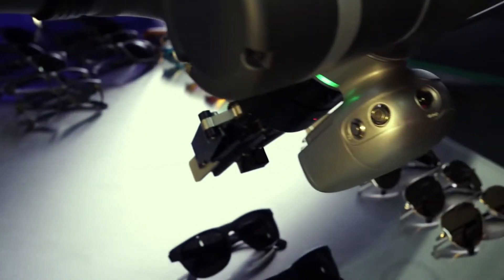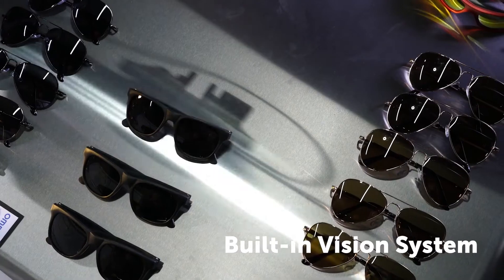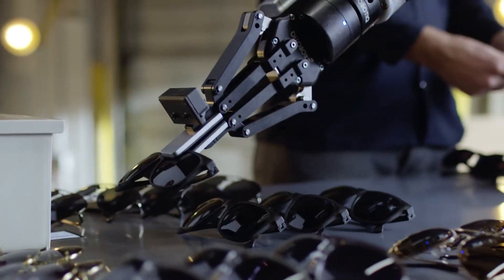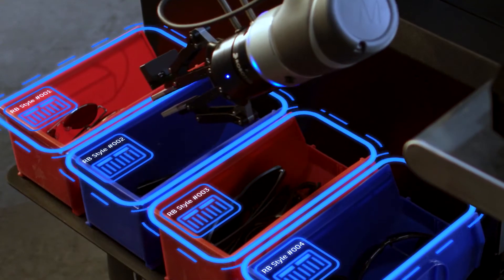With the OMRON TM collaborative built-in vision system and landmark navigation, the Mobile Manipulator is capable of precise inspection, pick and place, sorting, and assembly.